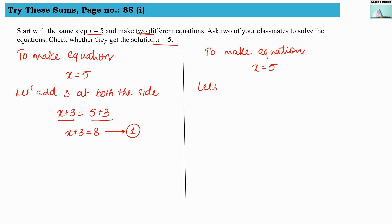Let's multiply 2 at both sides. So I am multiplying 2 at both sides. X into 2, I can write 2x equals 10. Now this is my second expression.